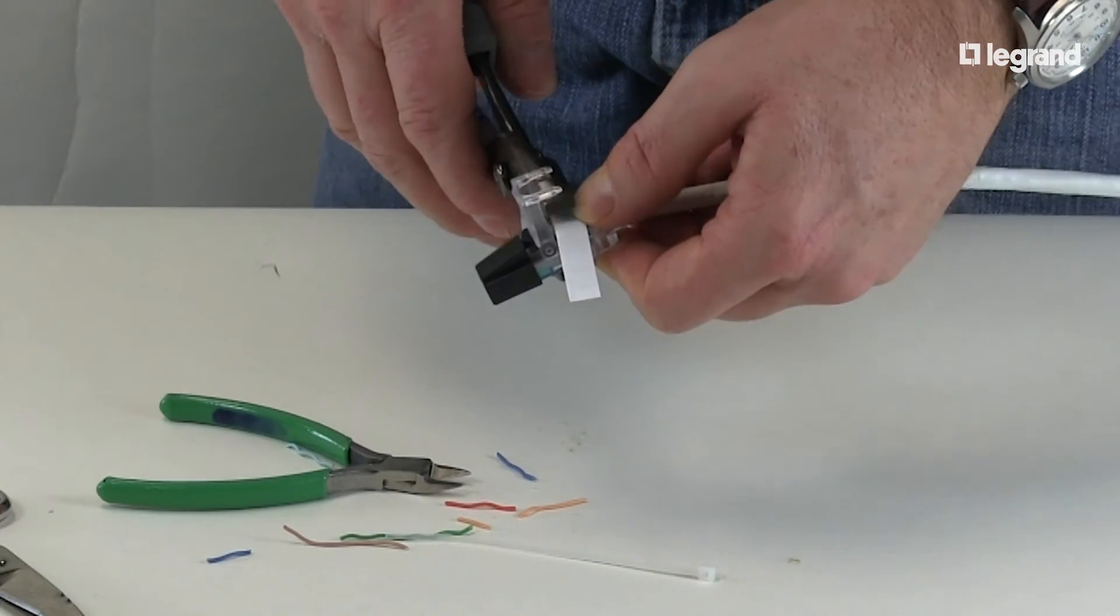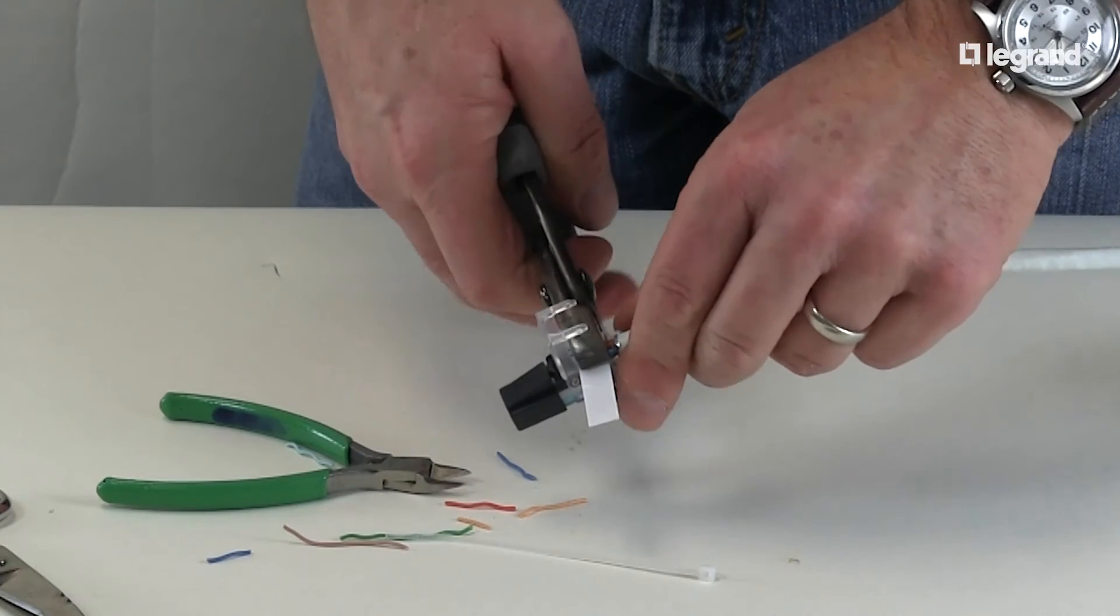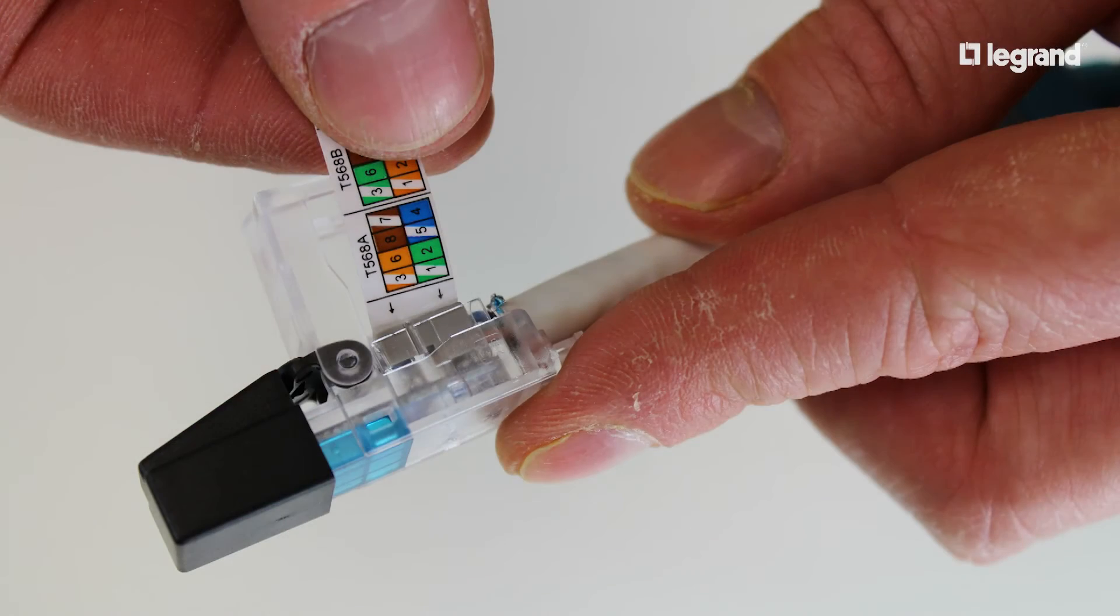With the wiring cap placed in the correct position on the plug, use your pliers to clamp the wiring cap until it completely sets into place on the plug. Now your wiring cap should be securely attached to your plug.